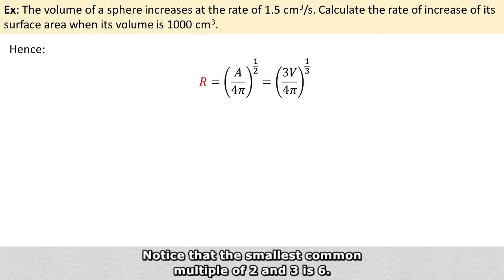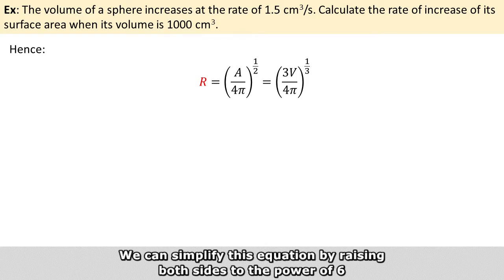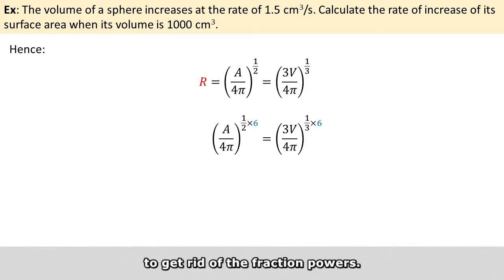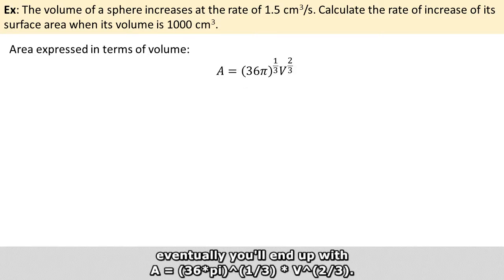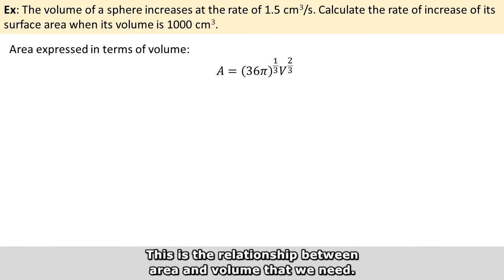Notice that the smallest common multiple of 2 and 3 is 6. So we can simplify this equation by raising both sides to the power of 6 to get rid of the fractional powers. Working through the algebra, we eventually get A equals (36π)^(1/3) multiplied by V raised to the power of 2/3. This is the relationship between area and volume that we need.